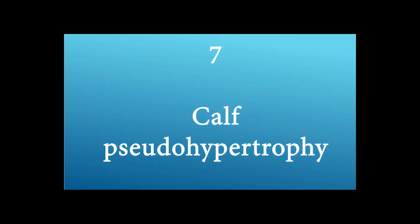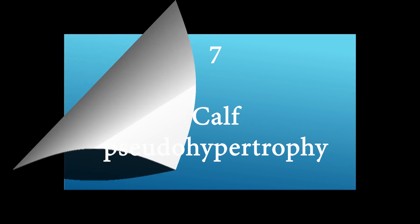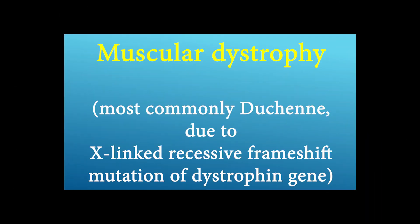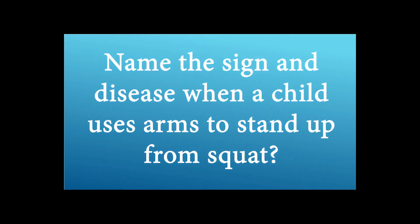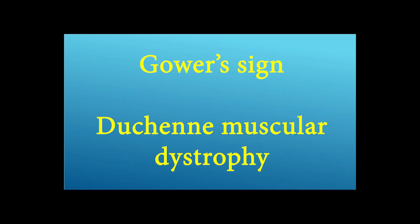Calf pseudohypertrophy — what is the first thing that pops in your mind? The answer is muscular dystrophy, most commonly Duchenne, due to X-linked recessive frameshift mutation of the dystrophin gene. When a child uses arms to stand up from a squat, it's called Gower's sign, and the disease is Duchenne muscular dystrophy.